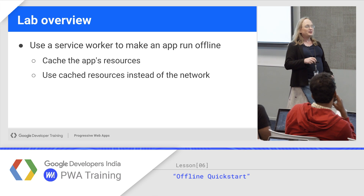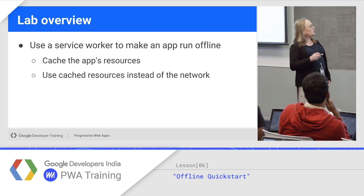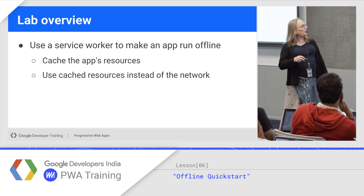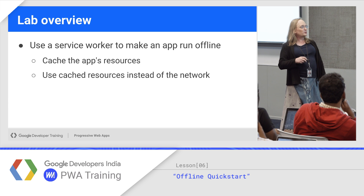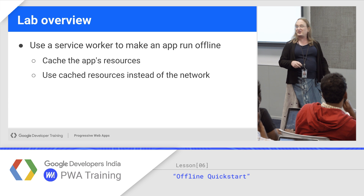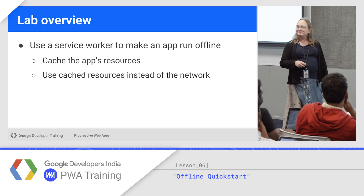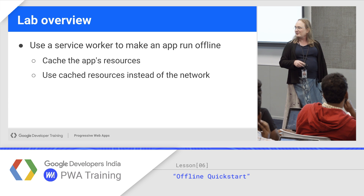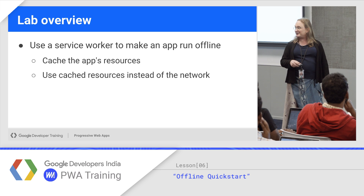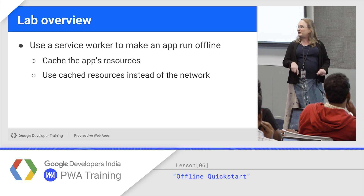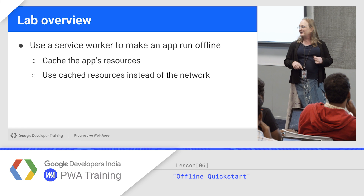Here's your lab: use a service worker to make an app work offline. You'll cache the resources and use them instead of the network — it's just that easy. It's scheduled for half an hour, but it'll probably take you 15 minutes. I'll check in with you in 15. Go ahead and start.